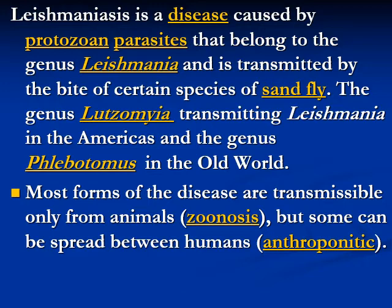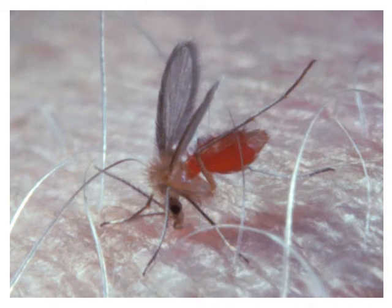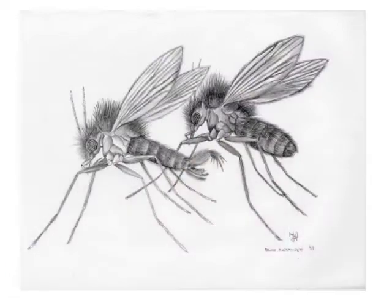Some forms can be spread between humans — in other words, anthroponotic. The sandfly has two genera: Phlebotomus in the Old World and Lutzomyia in the New World. The most important thing about the sandfly is that it stands with its wings raised in a V-shape. Only the female sandfly feeds on blood and transmits the disease; the male does not feed.